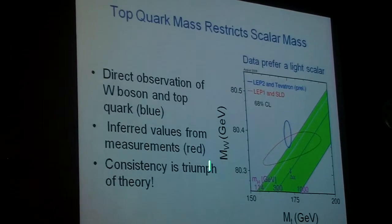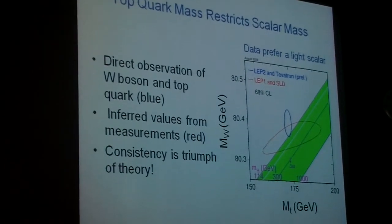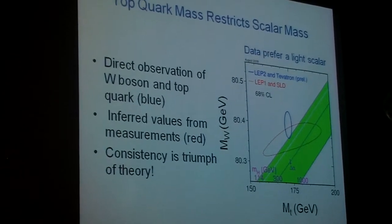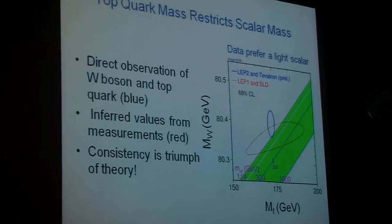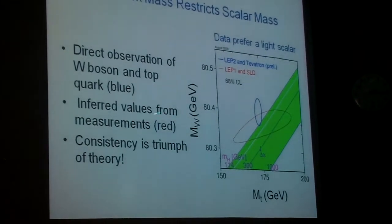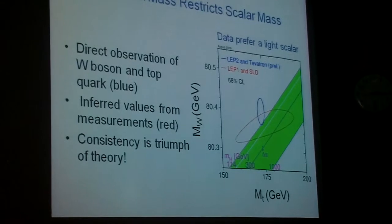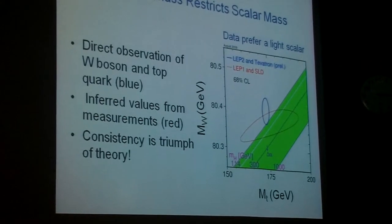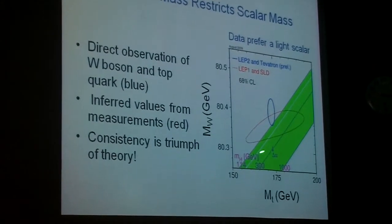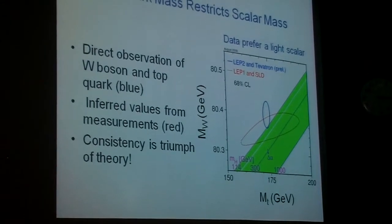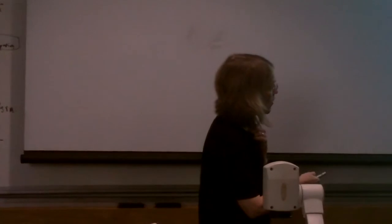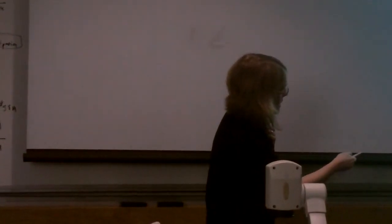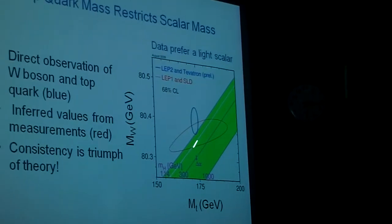So what this plot shows is the W mass and the top quark mass. While we've measured the W mass and the top quark mass, so the blue curve here are the experimentally measured numbers. Well, now we can infer the values of the W mass and the top quark mass from this table of experimental results I showed you on the previous slide. That's this red curve. And you can see that they overlap. So this is a great triumph of the theory that we essentially predict the top quark mass from our precision measurements. So since the theory depends logarithmically on the scalar mass, it only changes a little bit as we go from a relatively light scalar.